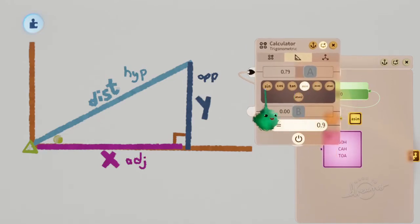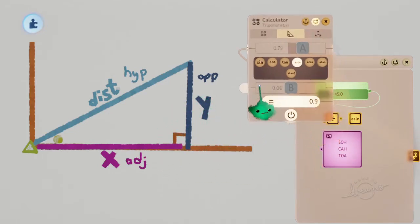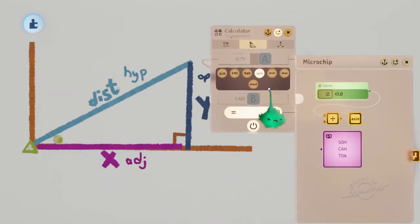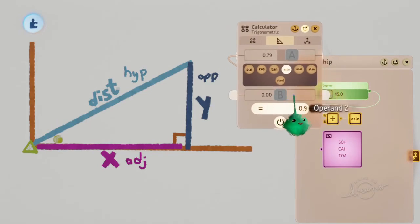So arcsine takes the sine result, which we know from here is opposite over hypotenuse. So if you have the opposite and hypotenuse, you can divide opposite by hypotenuse, wire it in here, do arcsine, and it will give you the angle down here in radians. Then you can do that conversion I talked about earlier to get degrees if you want it. And the same for arc cosine and arc tangent.